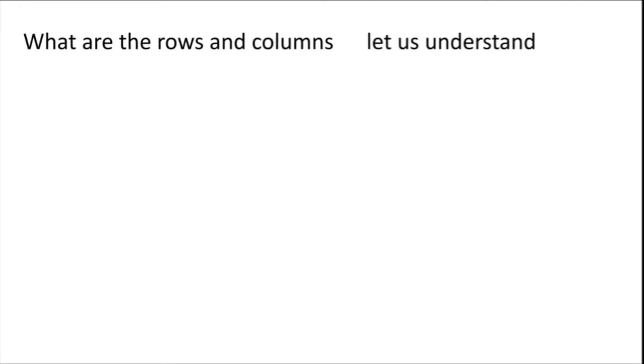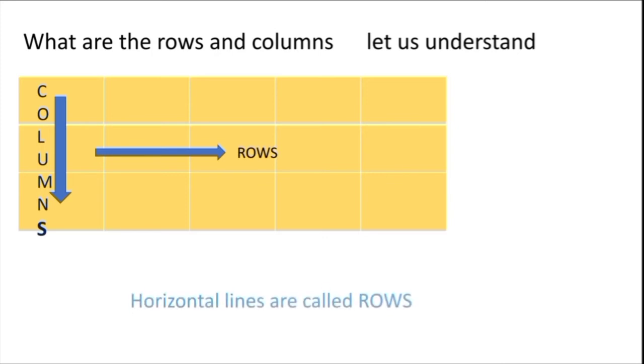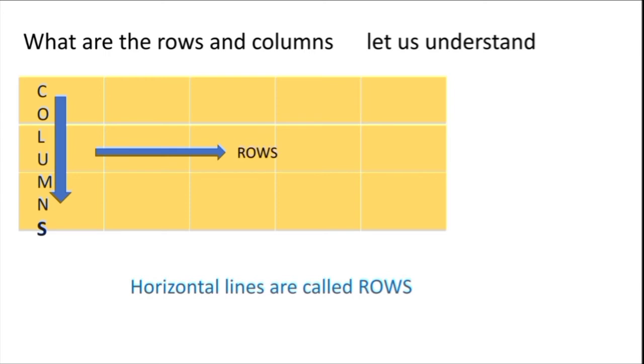Now let us understand what are the rows and what are the columns. The horizontal lines are called rows and the vertical lines are called columns. Look at the picture. Here it is horizontal arrow mark is there. So horizontal lines are called rows and vertical mark is there. They are the columns.